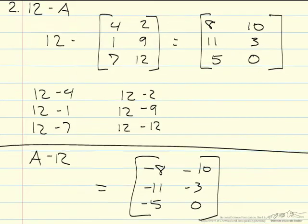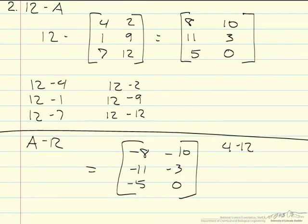And this is because it would be 4 minus 12, 2 minus 12, and so on. This is something you have to remember for all mathematics, not just with matrices. But it can become extremely important later on when you are working with entire matrices rather than an individual scalar.